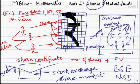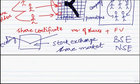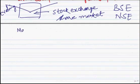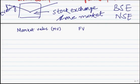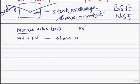Shares are bought or sold at a value called the market value. Face value is the actual value of the share when it was initially brought into the market, while market value is the current value in the market. Now, it is interesting to understand that if the market value of a share is the same as the face value, there is no difference between the two, and we say that the share is at par.